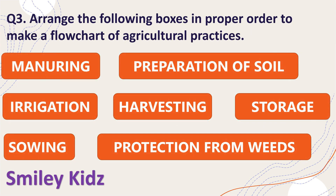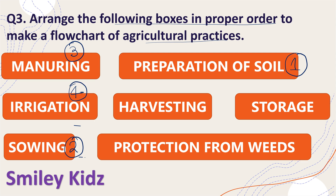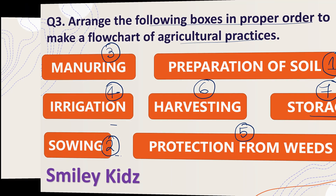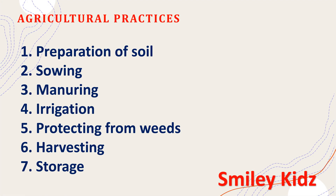Question 3: Arrange the following boxes in proper order to make a flow chart of agricultural practices. The seven processes in order are: first, preparation of soil; second, sowing; third, manuring; fourth, irrigating; fifth, protection from weeds; sixth, harvesting; and seventh, storage.